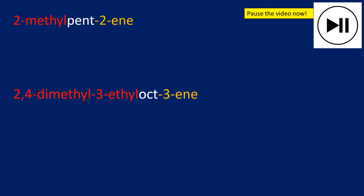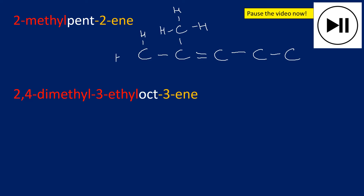Now pause the video and try to draw these two molecules from their names. For 2-methylpent-2-ene: five carbons in a row, a double bond between carbons two and three, and a methyl group on carbon two. A quick tip — it's easy to put too many or too few hydrogens. Make sure every hydrogen has exactly one bond, and every carbon has exactly four bonds. Around the double bond, it's tempting to add an extra hydrogen, but that would be wrong — check each carbon has four bonds total.